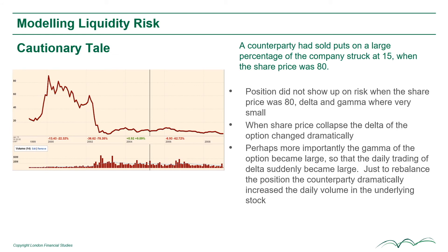Just to rebalance the position, the counterparty was having to dramatically change their delta position, dramatically increasing the daily volume of the underlying stock. What was even worse was that as the underlying went down, because the counterparty was short gamma, they had to sell the underlying. This fact that they were having to sell when the market was going down was a feedback loop that increased the volatility of the underlying.